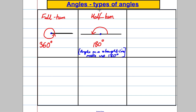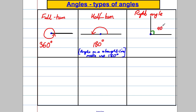Having done a full turn and a half turn, the next thing is a quarter turn. A quarter turn has a special name — we call it a right angle. It must be half of 180, which is 90 degrees. We usually mark it with a small square symbol, and you don't always have to write 90°; that square symbol alone denotes 90 degrees.